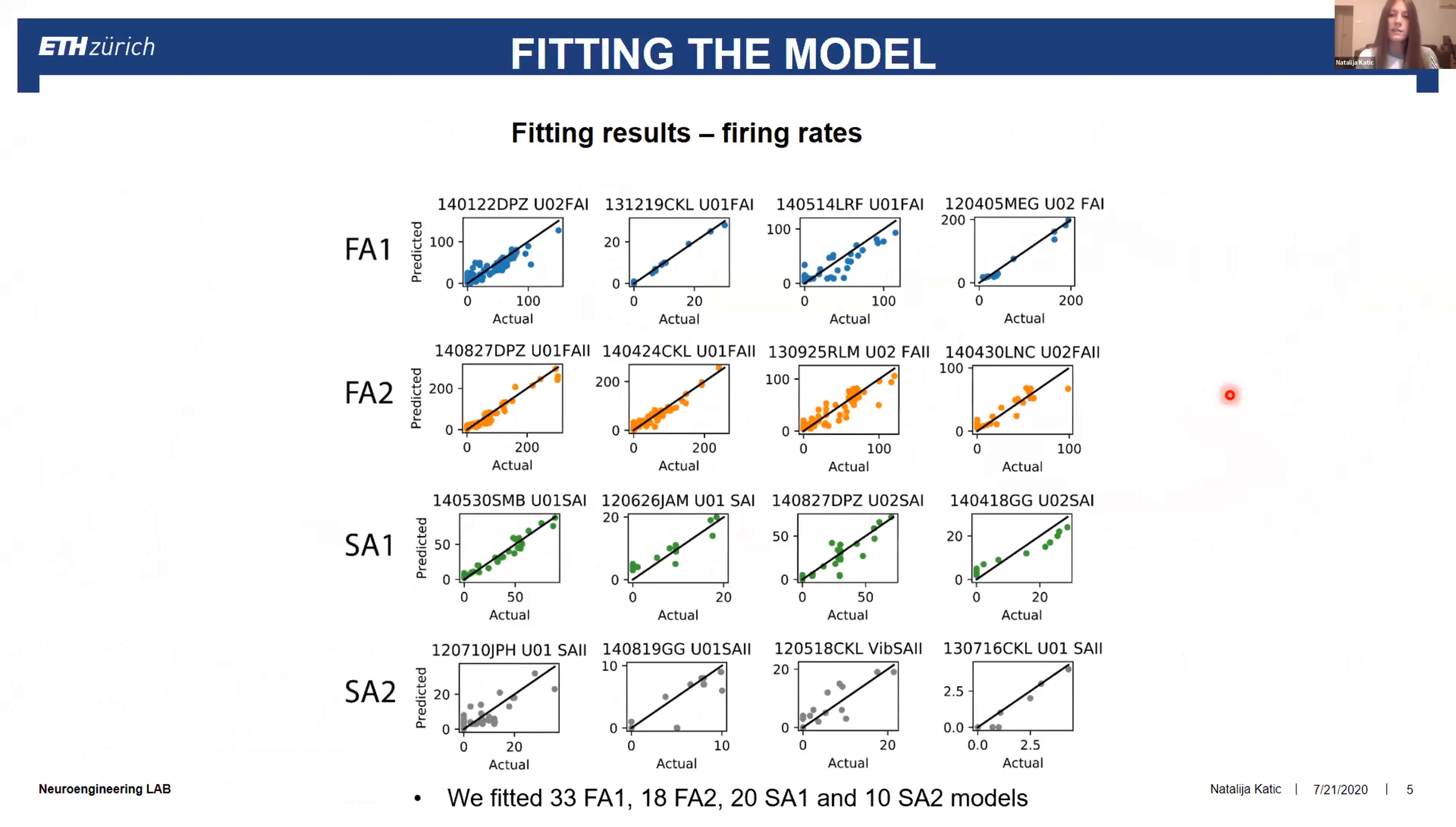This is what we get as fitting results. We fitted several models for every afferent type, but this is just some of them to show you the concept. Every one of these dots has actual and predicted firing rate. As closer as these dots are to the linear line, it means that our fitting is done better.